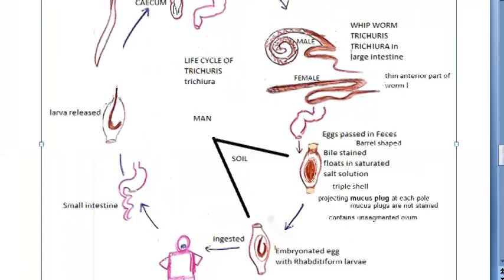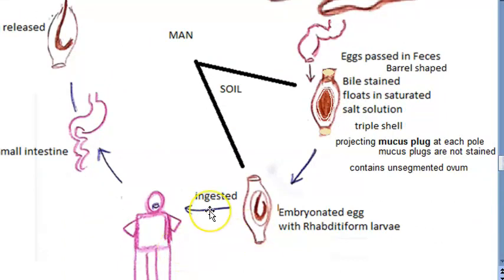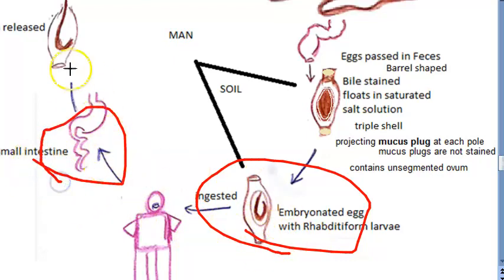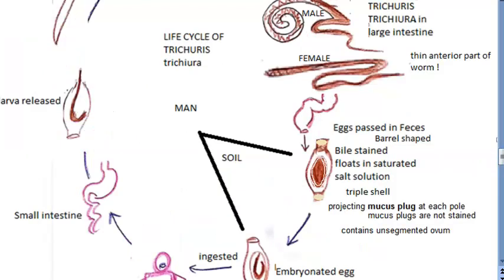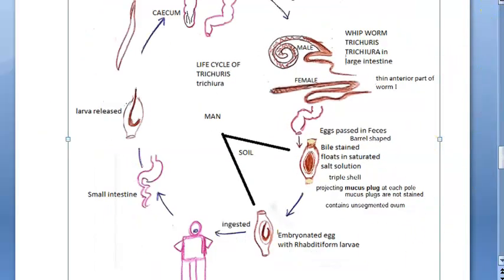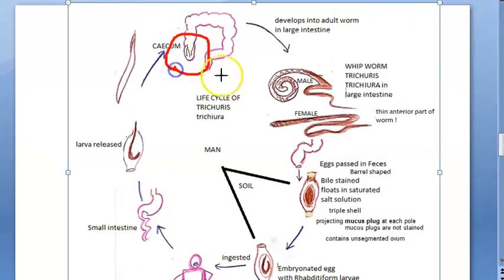The man gets infected by ingesting contaminated food or water containing the embryonated egg with rhabditiform larva of Trichuris trichiura. This embryonated egg goes to the small intestine, where the larva is released from one of the poles of the egg. From the small intestine, the larva goes to the cecum, where it matures into an adult worm. The hair-like anterior part pokes into the cecum, attaching itself there.